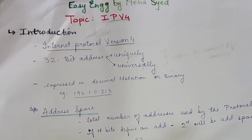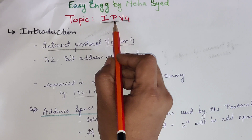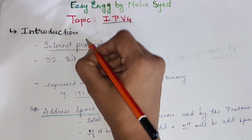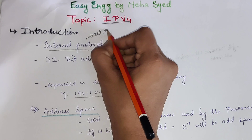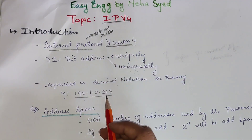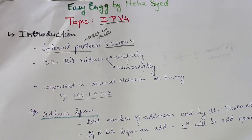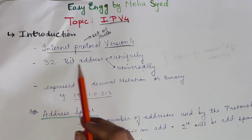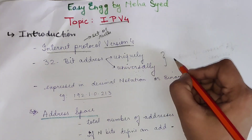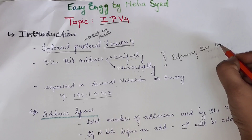Welcome back to Easy Engineering by Neha Sayar. Today's topic is IPv4, that is Internet Protocol version 4. Internet Protocol is nothing but a set of rules for communication over the Internet. It is a 32-bit address, and it is uniquely and universally used for defining the connection of devices.